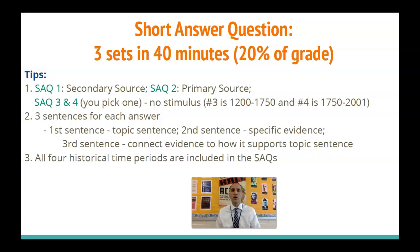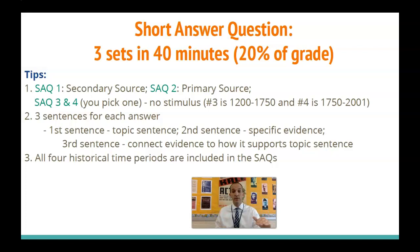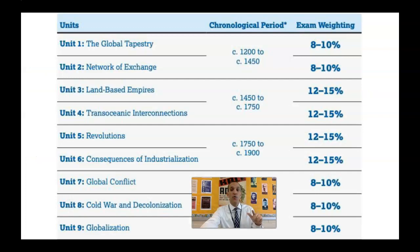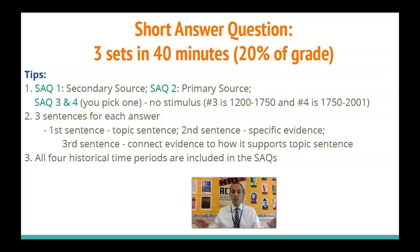My recommendation is three sentences for each part, no matter what the first word says. First sentence should be your topic sentence: 'One way in which the secondary source shows this is...' Sentence two: cite something specific — a fact, evidence, something detailed from the document that shows the reader you know what you're talking about. Sentence three: connect that specific evidence back to how it answers the question. Also, all four historical time periods will be covered across these four questions, so you'll see a little from each time period.